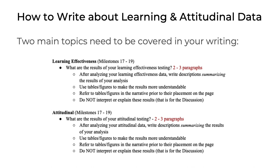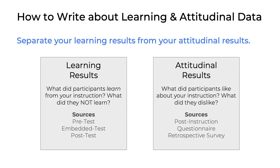These parts of the results section of your paper should summarize the results of your data analysis work. As a little bit of a refresher, you should separate your learning results from your attitudinal results. Your learning results will talk about what participants learned from your instruction and what they did not learn. The data sources that will give you those results will include your pre-tests, embedded tests if you had any, and of course your post-tests.